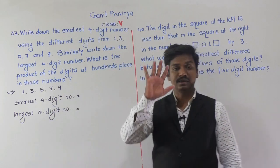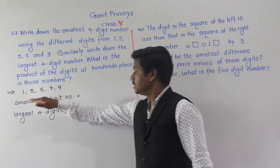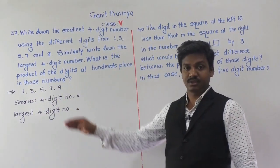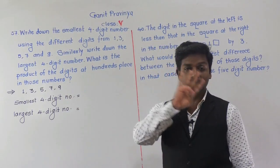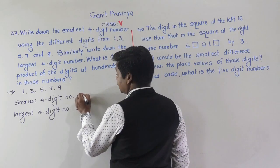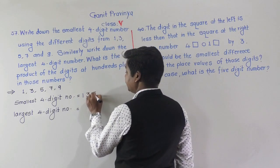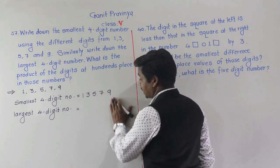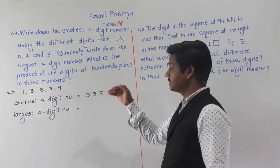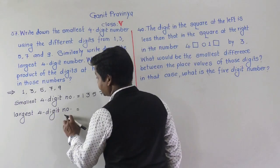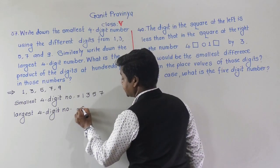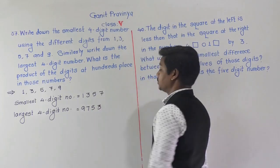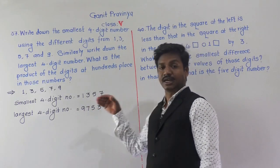Since there are 5 digits and we need 4-digit numbers, for the smallest 4-digit number we arrange in ascending order — 1, 3, 5, 7, 9 — and take the first four digits: 1,357. For the largest 4-digit number, arrange in descending order — 9, 7, 5, 3, 1 — and take the first four: 9,753.